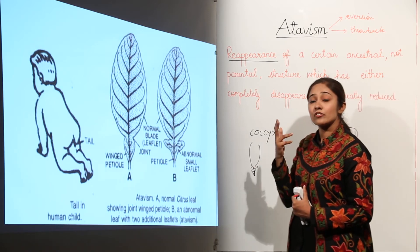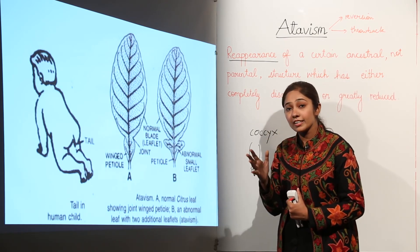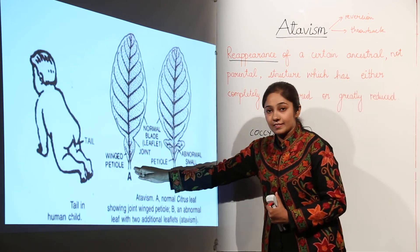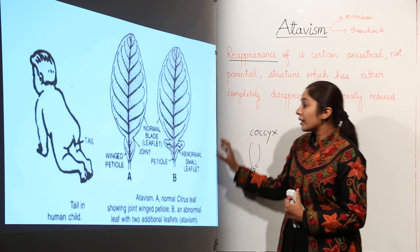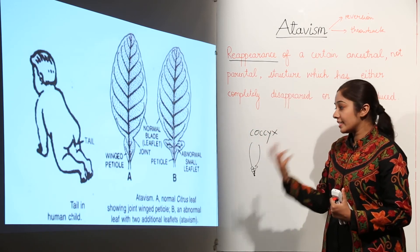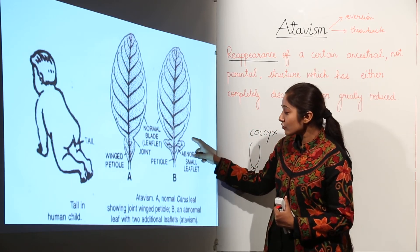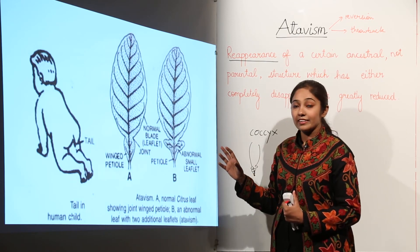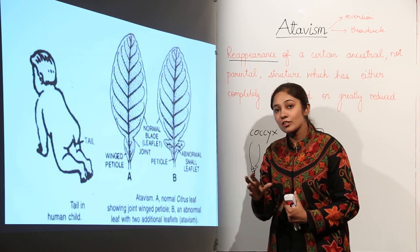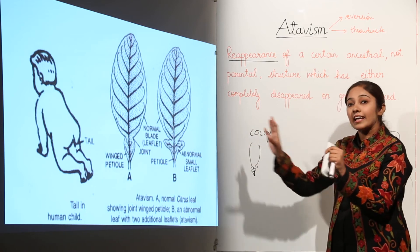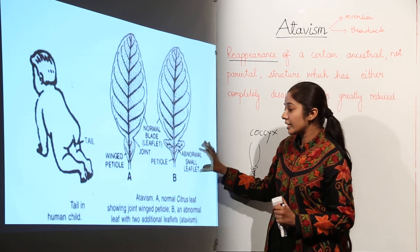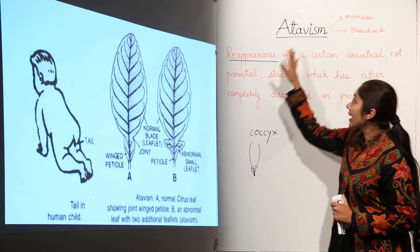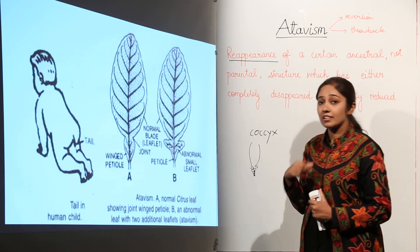As mentioned, the citrus leaf was once trifoliate. Over time it evolved to its current form. But in some citrus leaves, we see the development of an abnormal small leaflet which gives us an idea that the ancestor of the citrus leaf would have had this structure. So this extra small leaflet in citrus leaves is an example of atavism — the reappearance of ancestral characters.